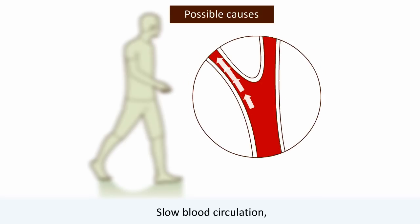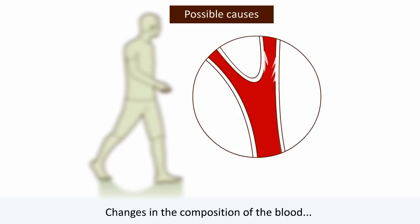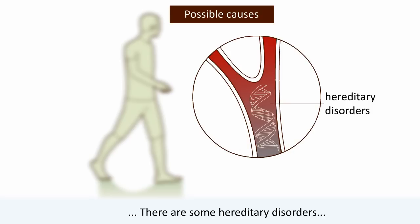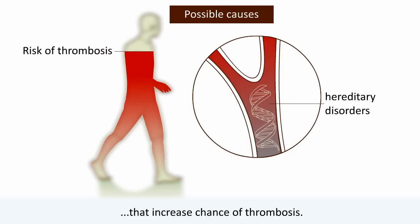Possible causes of thrombosis include slow blood circulation, a damaged wall of the blood vessel, and changes in the composition of the blood. There are also some hereditary disorders that increase the chance of thrombosis.